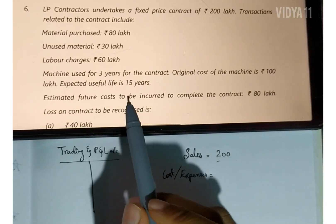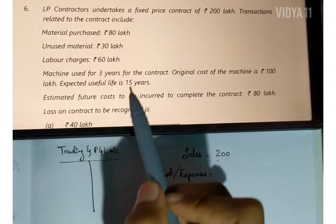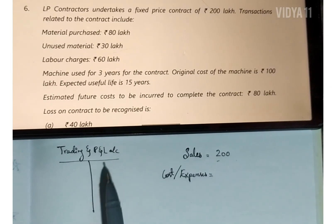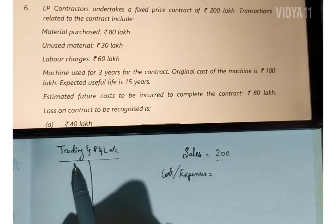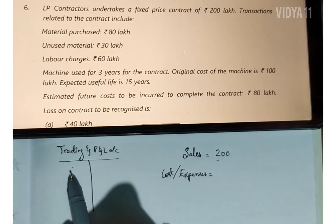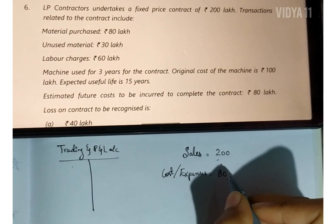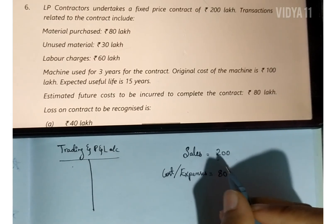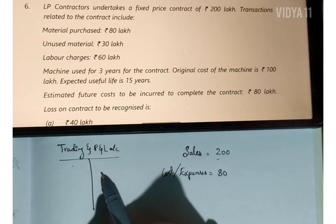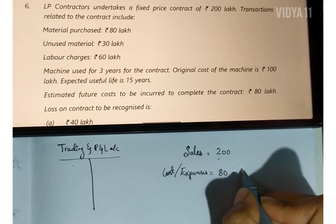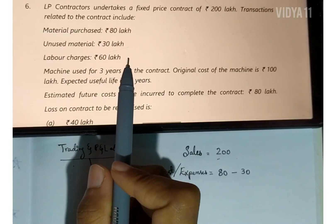To complete this contract, keep a simple trading and P&L account in mind. Material purchased is an expense — debit side — 80 lakh. Unused material is like closing inventory or closing stock, so we take it on the credit side and deduct it: 30 lakh.